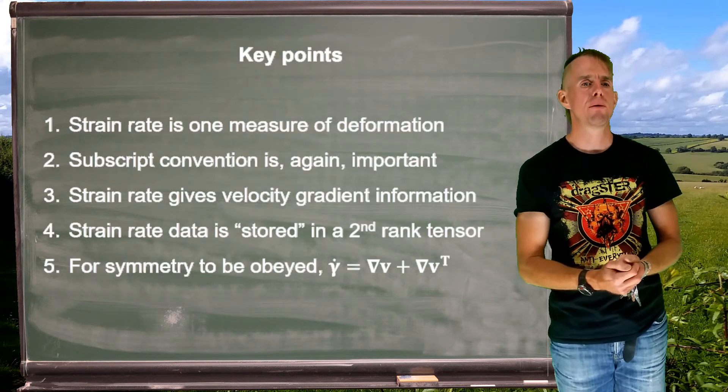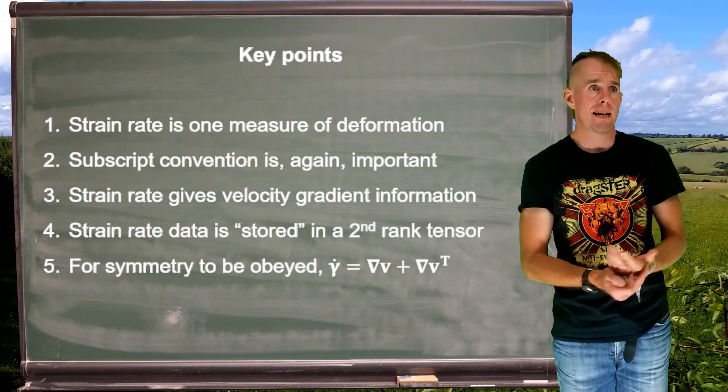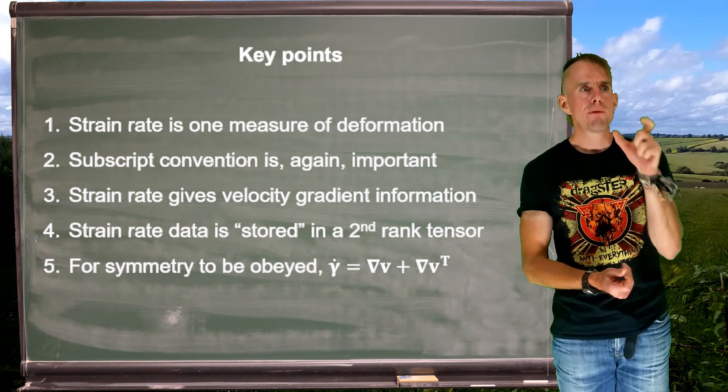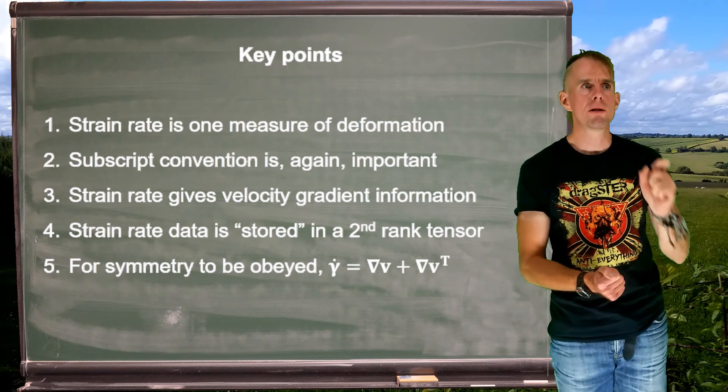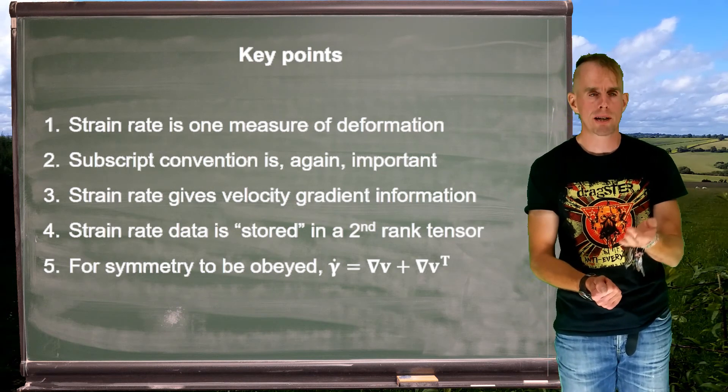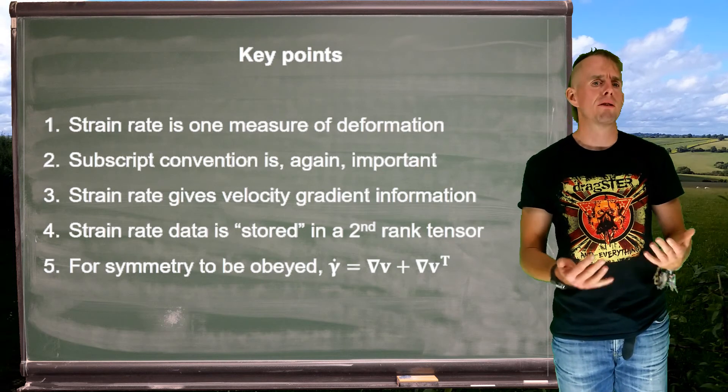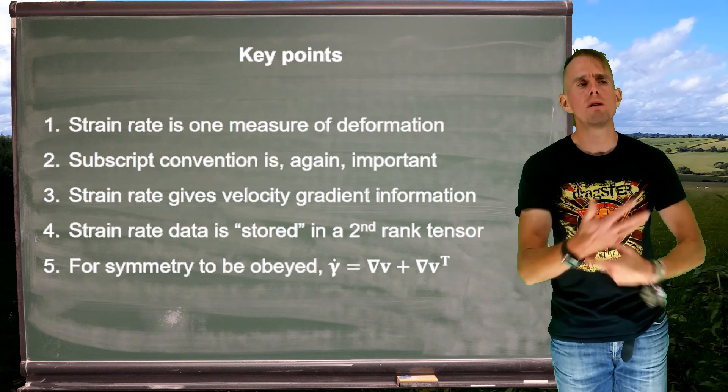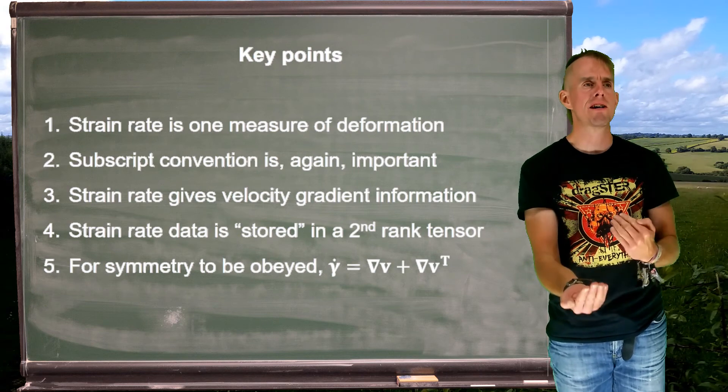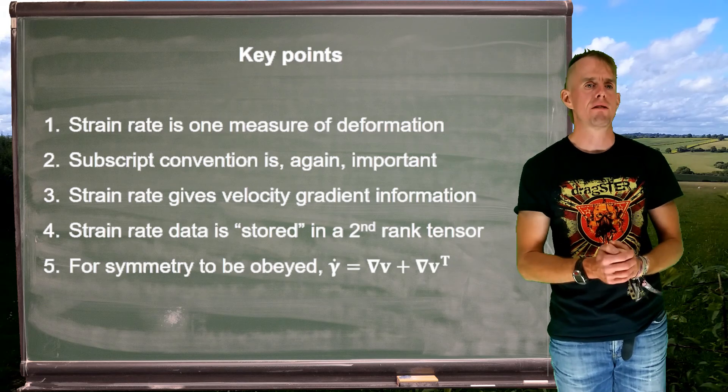Let's recap some key points. We're using a measure of deformation called strain rate, and it's, in effect, a tensor of velocity gradient information. If we want to access a particular element of that tensor, we need to do so by using the correct subscripts, and it's important that we get those right. We see that strain rate is all about velocity gradient information, but because we've got this symmetry, it's actually two bits of velocity gradient information added together. So gamma dot is grad v plus grad v transpose.